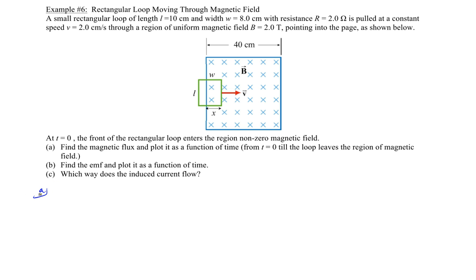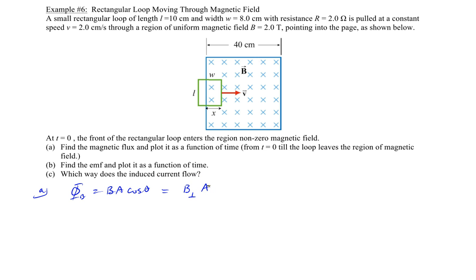Let's start off with part A. We defined the magnetic flux through a plane surface in a constant magnetic field as B times A times the cosine of the angle between the magnetic field and the normal to that plane. Now since the magnetic field is pointing into the screen, which is perpendicular to the surface, we can simply write it as B_perpendicular times the area, since theta is 0 degrees and cosine theta equals 1.